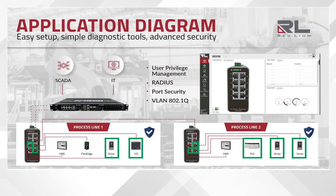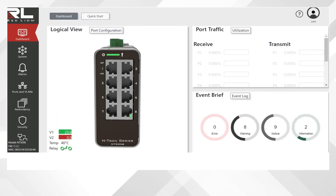The NT5000 is also easy to set up and manage using the web user interface. When we log into the switch, we can see the logical view, which gives us a good representation of exactly what the switch looks like in the panel. We can also see the event brief — if there are any errors or warnings, we can see them right on the dashboard. Port traffic information quickly shows us where bandwidth-related problems lie, whether transmit or receive.